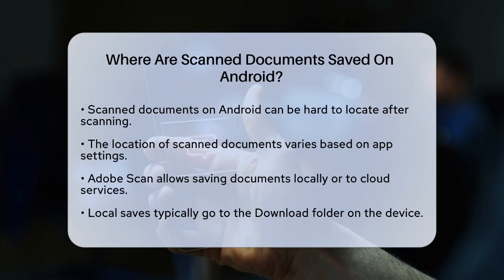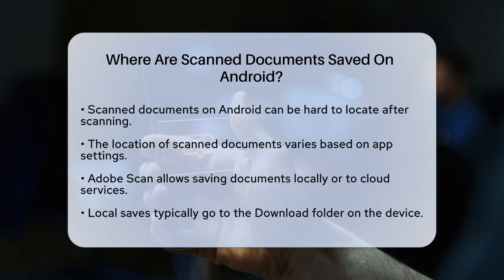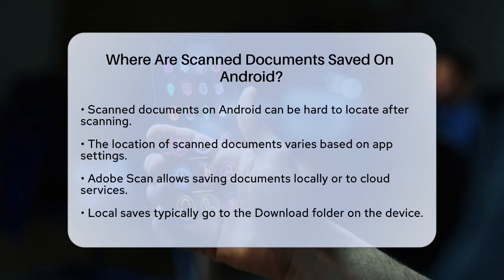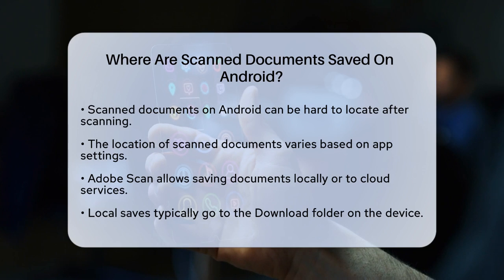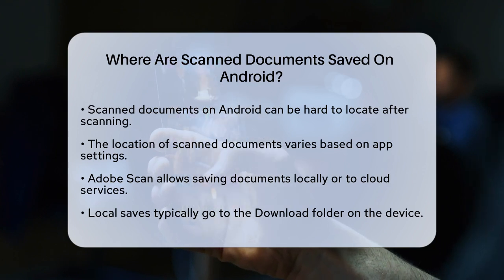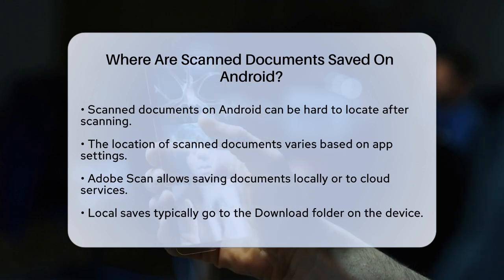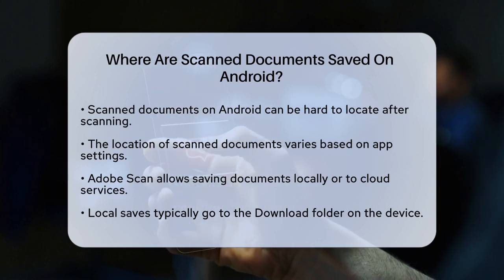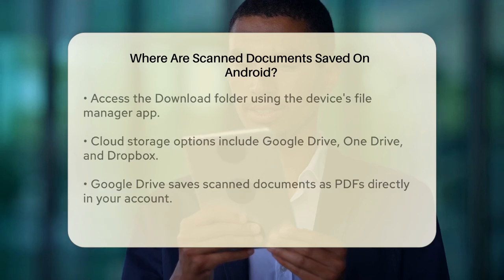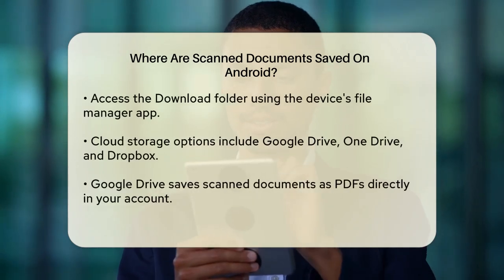When you use an app like Adobe Scan, the location of your scanned documents can vary based on the settings you've chosen. Adobe Scan gives you the option to save your scanned PDFs locally on your device or to third-party cloud storage services like Google Drive, OneDrive, or Dropbox. If you opt to save the document locally, it will be stored in the Download folder on your device.